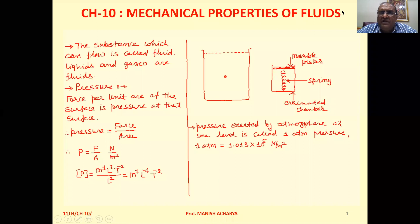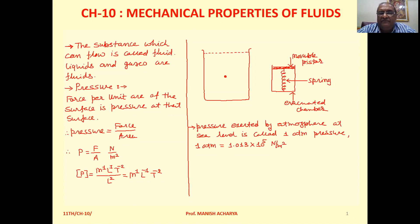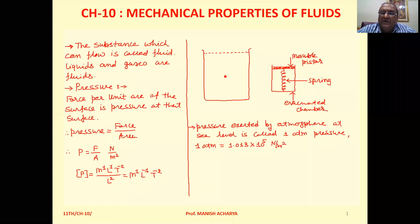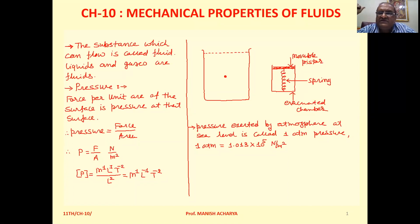First of all, we have to understand which types of substances are known as fluids. The substance which can flow is called fluid. In this sense, liquids and gases can be considered as fluids. Fluids, meaning liquids and gases, don't have a specific shape. The shape of the fluid is the shape of the container in which it is filled.